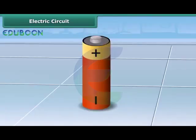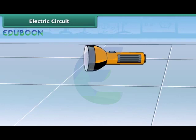An electric cell or dry cell is the source of electricity for the bulb to glow. Let us know how the bulb in a torch glows.